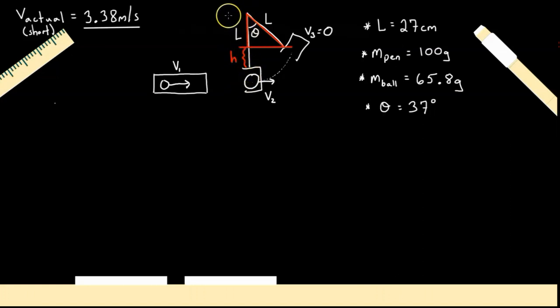And since the total length is L, this portion is going to be L minus h. So with our right angle triangle, I can do a little calculation here. I can do the cos of θ is equal to adjacent, which is L minus h, divided by our hypotenuse, which is just L. Now if I rearrange this, I can rearrange it to solve for h. So h would be L minus L cos θ.